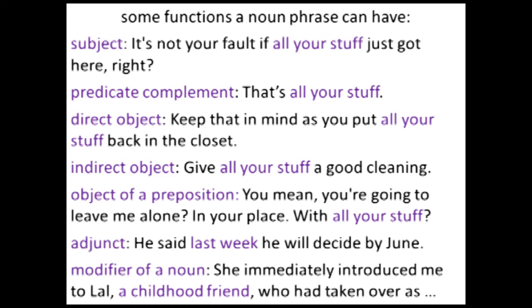Let's take a noun phrase — usually functions are assigned to phrases, not individual words. A noun phrase can have many different functions: it could be the subject, as in 'All your stuff just got here' — 'all your stuff' is a noun phrase (category) and it's the subject (function). It can be a predicate complement: 'That is all your stuff.' It can be a direct object: 'Put all your stuff' — it's the direct object of 'put.' It can be an indirect object: 'Give all your stuff a good cleaning.' It can be the object of a preposition: 'With all your stuff.' It can be an adjunct — things that can appear in almost any sentence — for example, 'last week' is a noun phrase functioning as an adjunct in 'He said last week.'